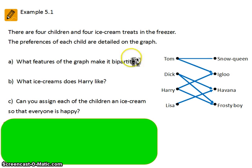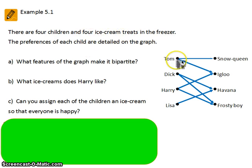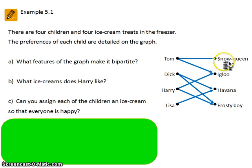Here's our example. There are four children and four ice cream treats in the freezer: Tom, Dick, Harry and Lisa, and four ice creams: Snow Queen, Igloo, Havana and Frosty Boy.